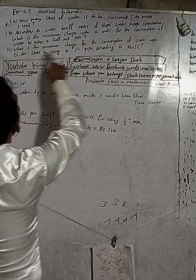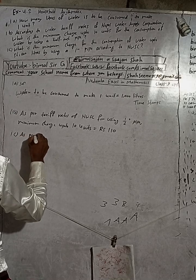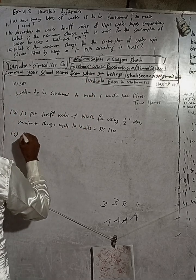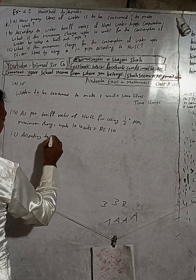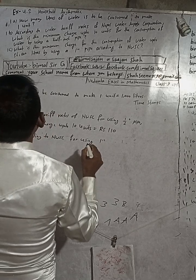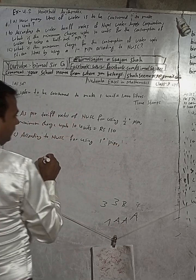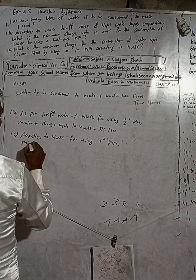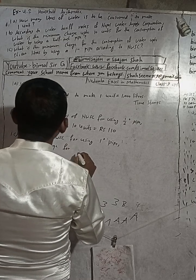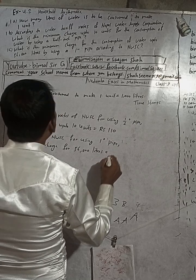Question 1c: What is the minimum charge for the consumption of water up to 56 units by using a one-inch pipe? According to NWSC, for using a one-inch pipe, the minimum charge for 56,000 liters — that is 56 units — is...